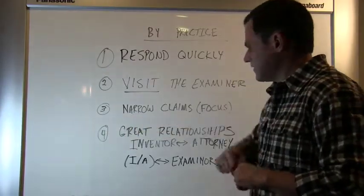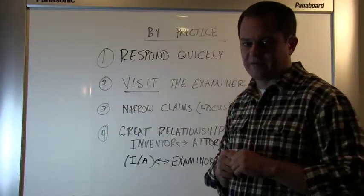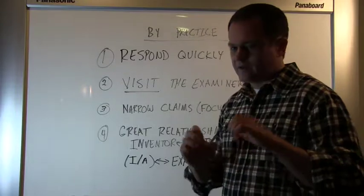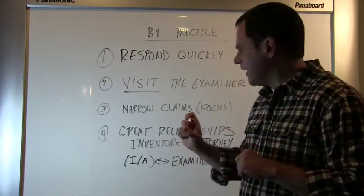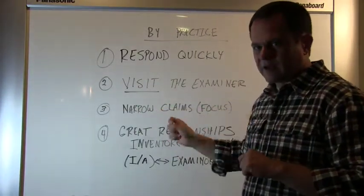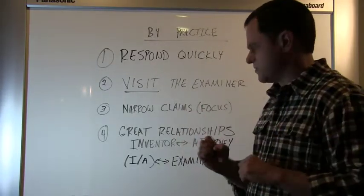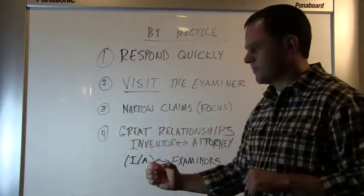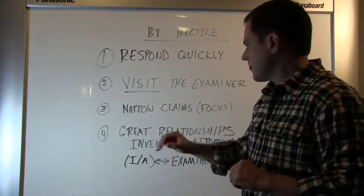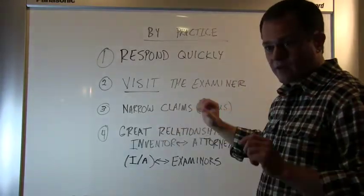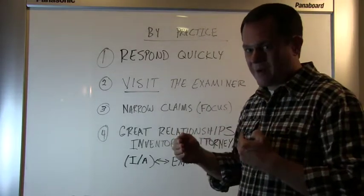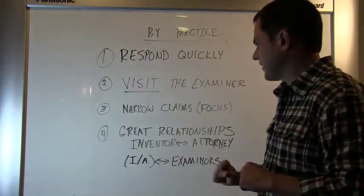A third hint is to focus on your narrow claim sets. Now, this is beyond the scope of this video, but a narrow claim set does not mean you're stuck with just those claims. There are other things that you can do to keep broader claim sets pending. But if your goal is speed, a narrow claim set will get through the patent office much faster than a broad claim set.